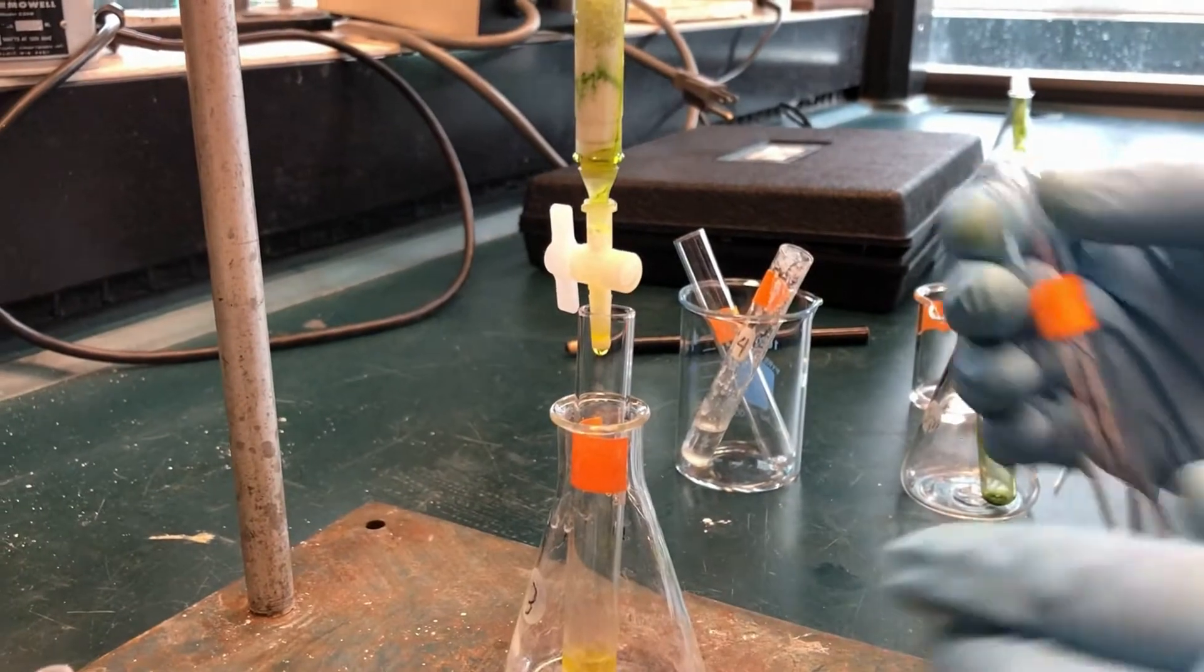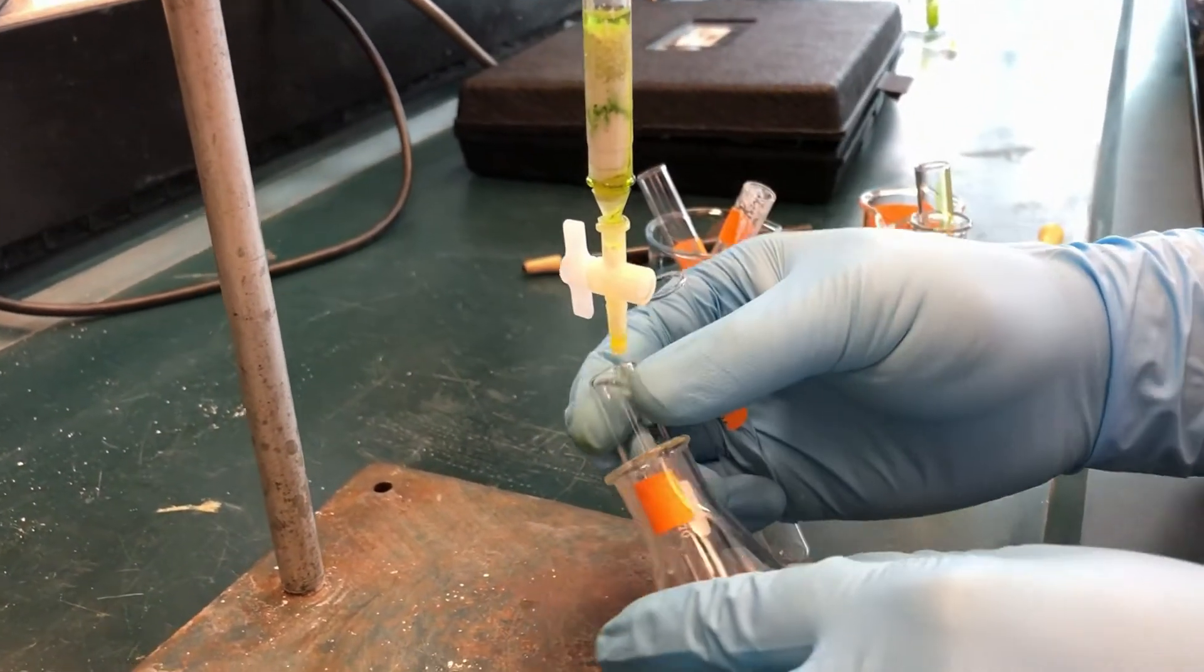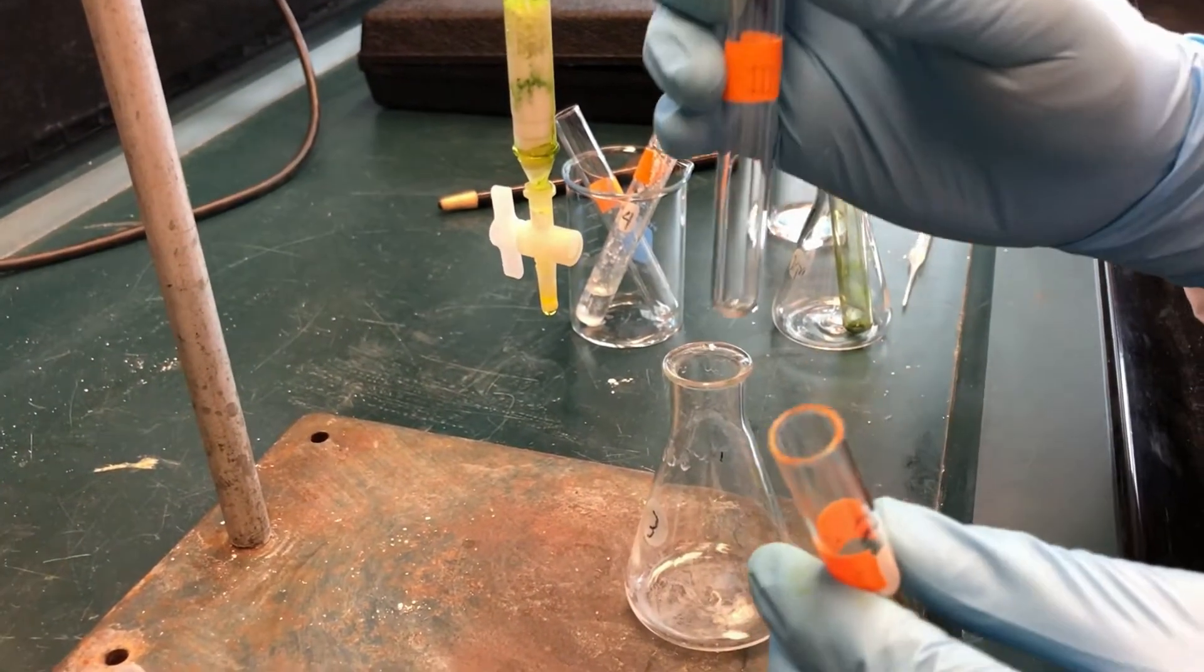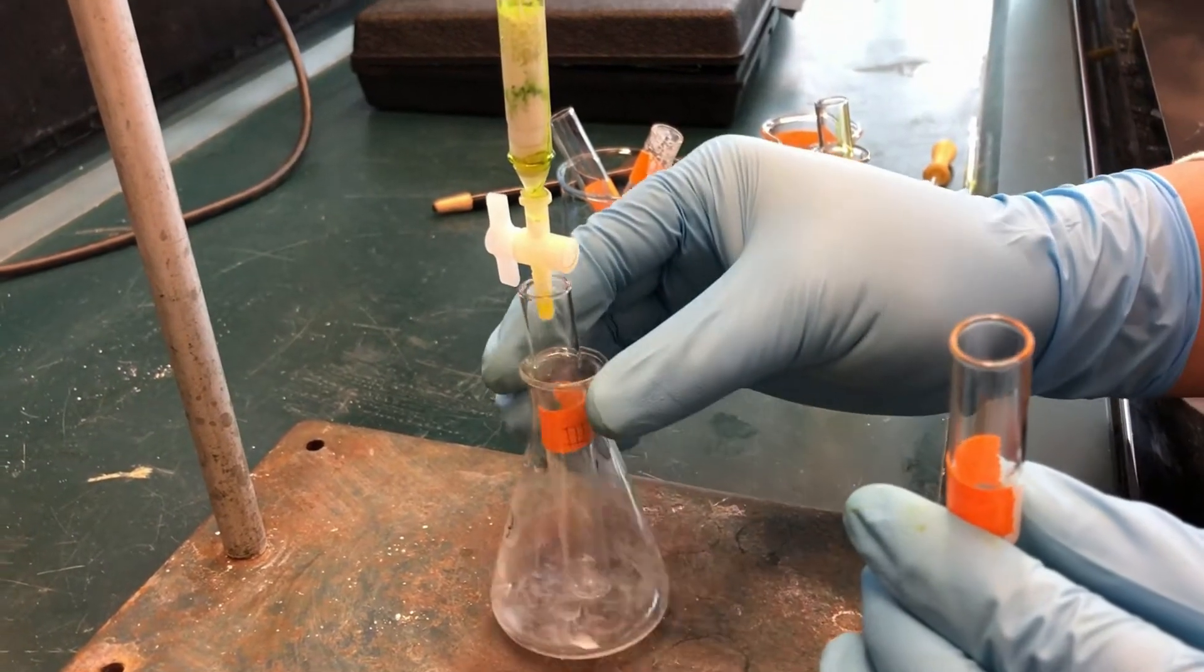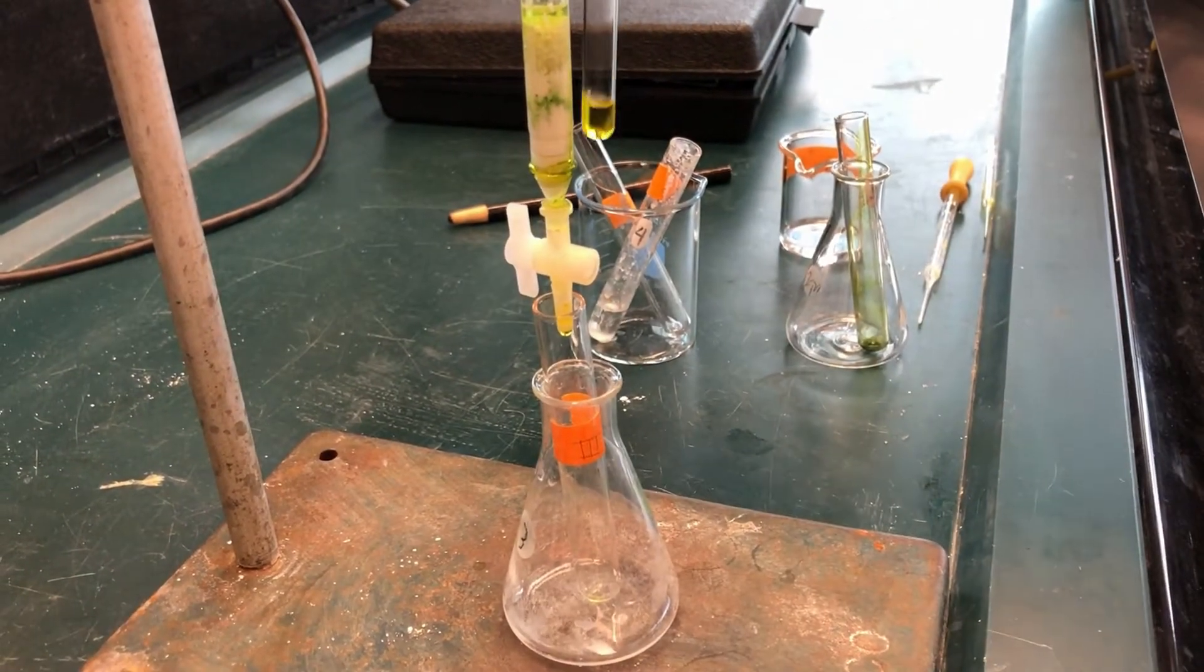After you have collected the yellow pigment, switch to test tube 3 to come back to the column to collect the intermediate between the green and yellow pigment until you can see the green band moving down the column.